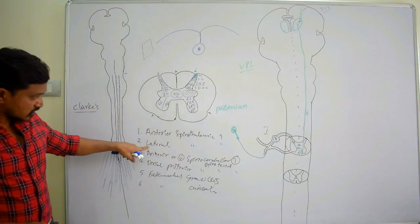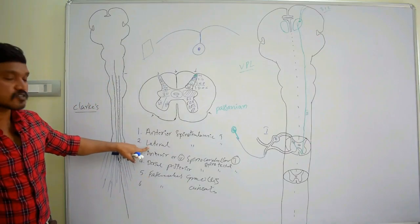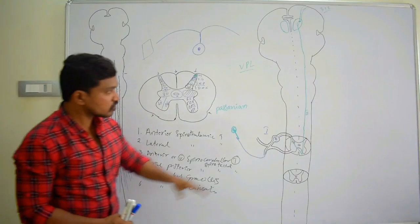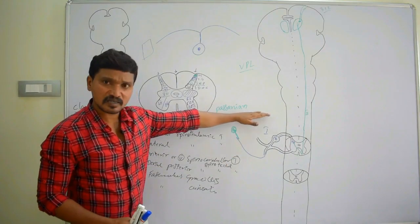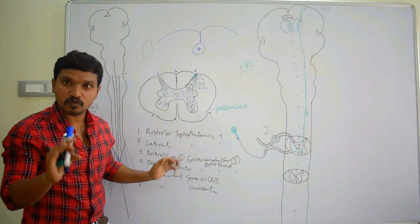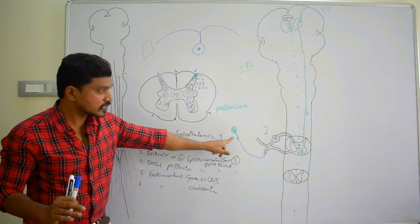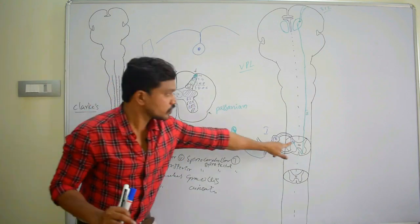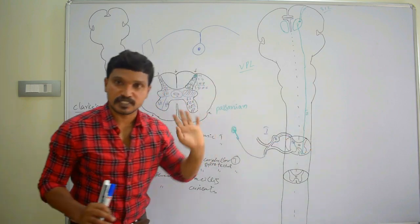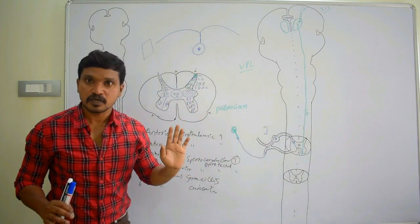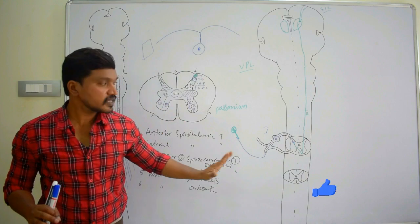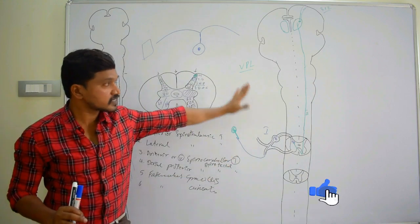Coming to the next one, the lateral spinothalamic tract. Since we know one tract, this tract is very easy. Only a few things will change — the receptor will change, the nucleus will change, and the white funiculus will change, that is, where the bundle is ascending. The remaining will be the same.